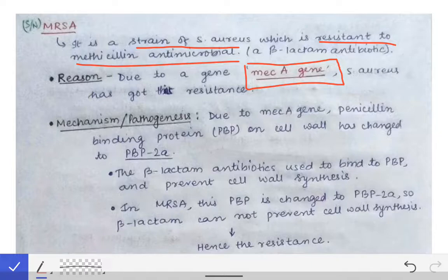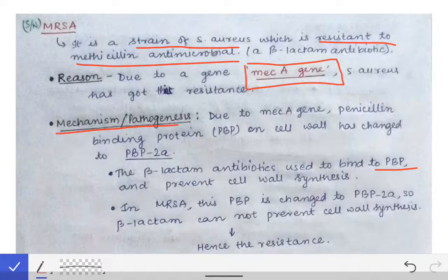This MEC-A gene is responsible for the conversion of Staphylococcus aureus to methicillin-resistant Staphylococcus aureus. How does this gene provide resistance? The mechanism is that normally on the cell wall of the bacteria there is a penicillin binding protein, PBP, to which the penicillin antibiotic binds and prevents cell wall synthesis, thereby killing the bacteria.